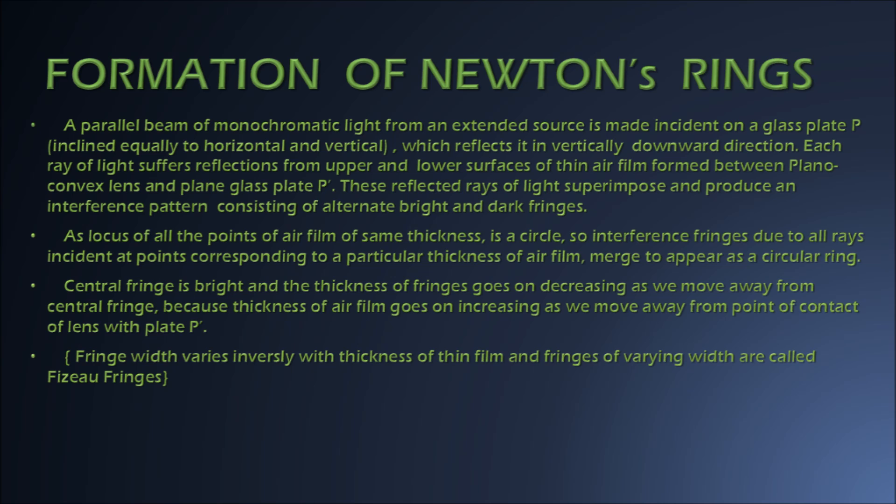The next point is why these fringes are circular in shape. The locus of all points of the air film of a particular thickness is a circle, so the interference fringes due to all rays of light incident at points corresponding to that particular thickness merge together to appear as a circular ring. It is noted that the central fringe is bright and the fringe width goes on decreasing as we move away from the point of contact of the lens and plate P'.